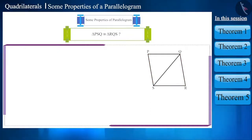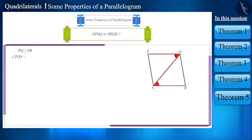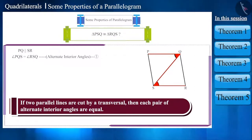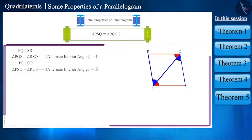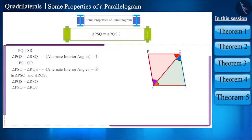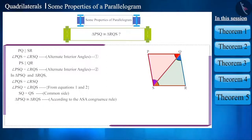This is a parallelogram. Therefore, side PQ is parallel to side SR and QS is the diagonal. So both angles PQS and angle RSQ will be equal, as these are alternate interior angles. Similarly, angle PSQ and angle RQS will also be equal. Now look at triangles PSQ and RQS — this pair of angles are equal and side SQ is the common side. Therefore, both these triangles are congruent according to the ASA congruence rule.